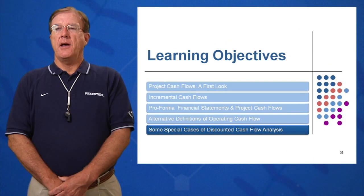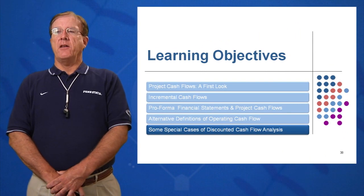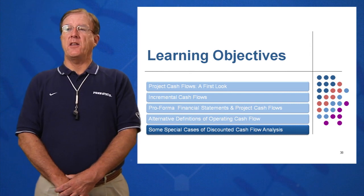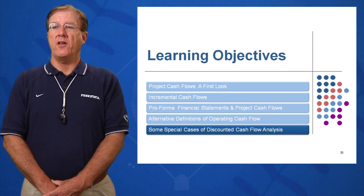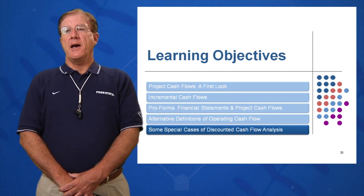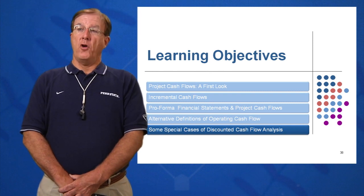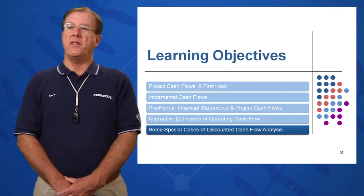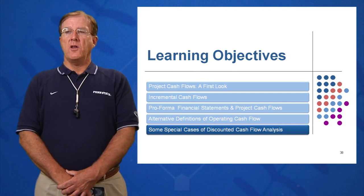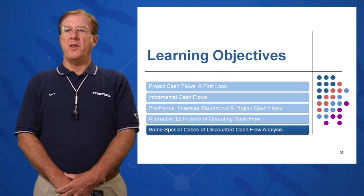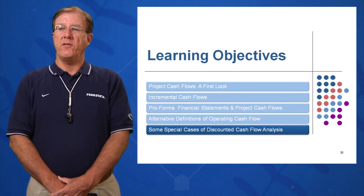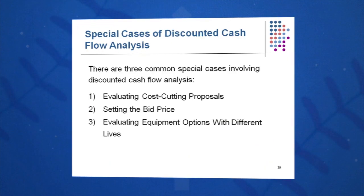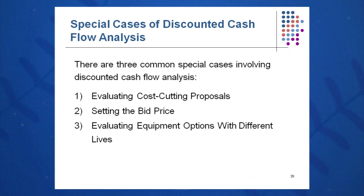The fifth and final learning objective for session 10 covers some special cases under which we look at discounted cash flow analysis. How can we use these tools if we are in the road building business, if we're installing a piece of equipment that will cut costs, or if we're installing two different pieces of equipment with different lives and maintenance costs but that perform the same function? We'll go over these three quickly.